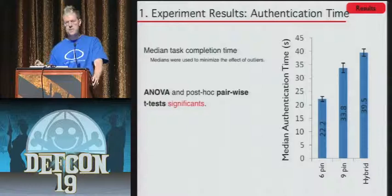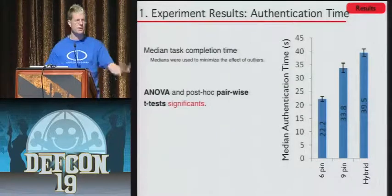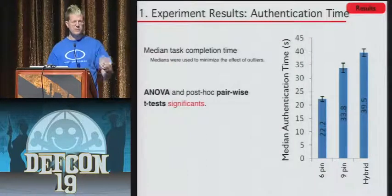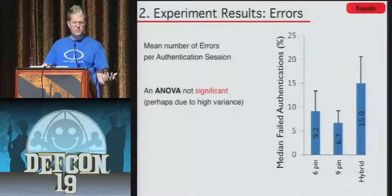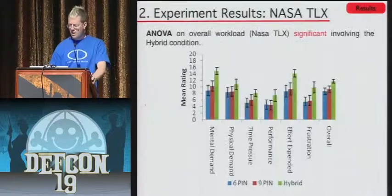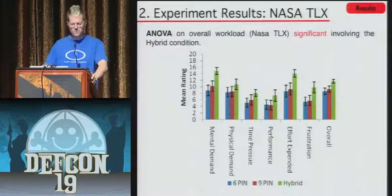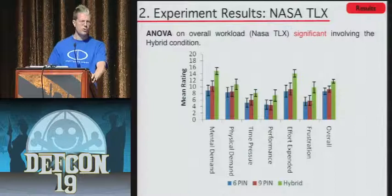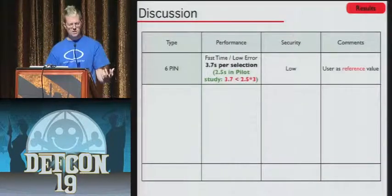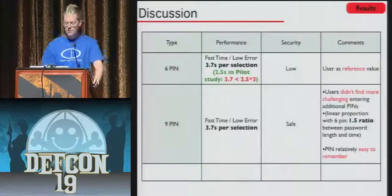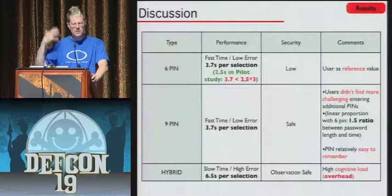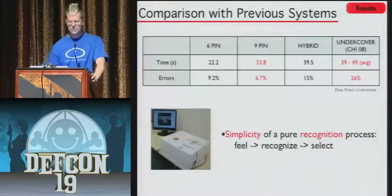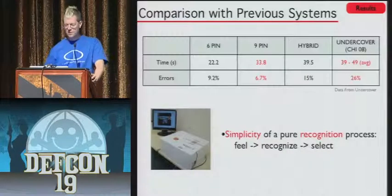In the human interface community we do user studies — basically rounding up anyone near the lab and giving them ten dollars or an ice cream voucher to play with the device. A pilot study first evaluated whether the tactons are perceptually distinct — can people recognize them? Then a full study to see if the hardware works effectively for authentication. The pilot study showed people could recognize them very easily with no errors. The user study had three conditions evaluating different pin lengths: a six-digit PIN — not secure to the standard of a four-digit decimal PIN but relatively memorable — and a nine-digit one which does conform to that brute force security level.